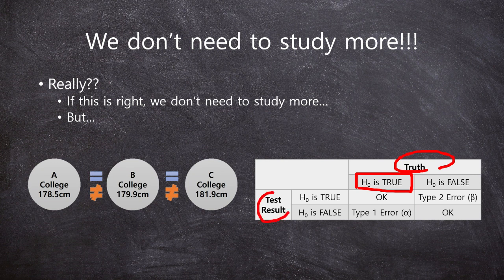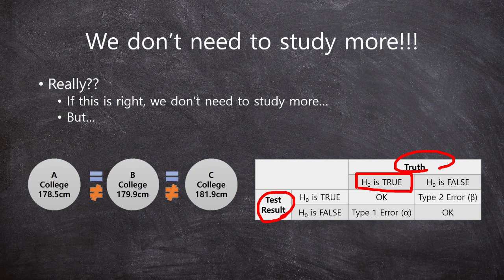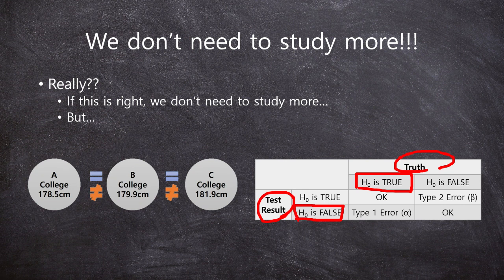shows that null hypothesis is false. This is possible. In this case, we call it Type 1 error, right?